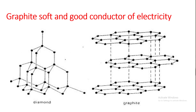In graphite, carbon atoms are arranged in different layers and each atom is covalently bonded to three of its neighboring atoms in the same layer. The fourth electron of each atom is free to move about. These free electrons make graphite a good conductor of electricity.